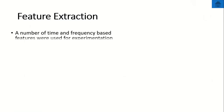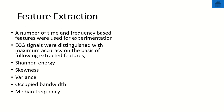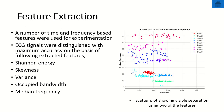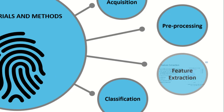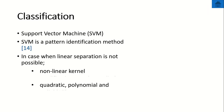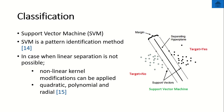The next step is feature extraction. A number of time and frequency-based features were used for experimentation and a combination was selected that yielded the best accuracy. This combination included channel energy, skewness, variance, occupied bandwidth, and median frequency. The scatter plot between median frequency and variance shows that these features best separate the different classes. For classification, support vector machine (SVM) was used. Among different kernels, the cubic kernel yielded the best result. SVM creates a hyperplane most suitable to distinguish one class from another.